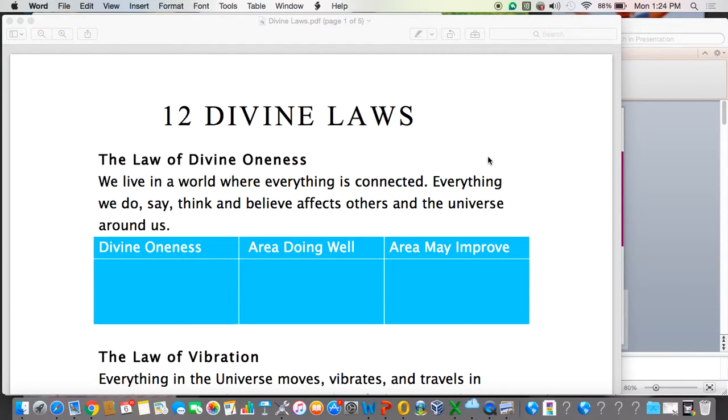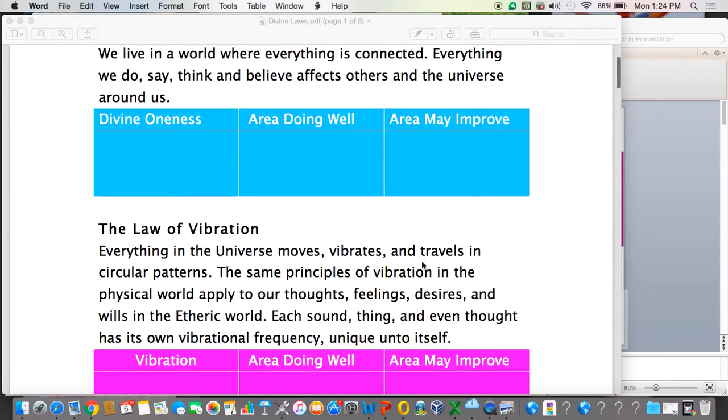This is an interactive activity that you can do on your own. We live in a world where everything is connected and everything we do, say, think, or believe creates ripples. So how are you doing well in this area? How may you improve? Thinking about the things you do, the things you say, the things you think, and what you believe. That's where you can think about how you can improve.